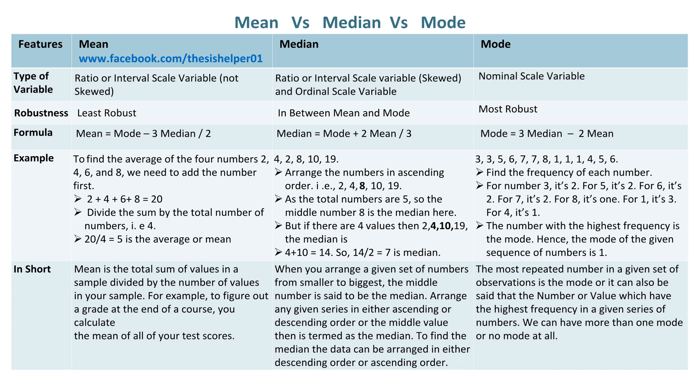When you arrange a given set of numbers from smaller to biggest, the middle number is said to be the median. Arrange any given series in either ascending or descending order and the middle value is termed as the median. To find the median, the data can be arranged in either descending order or ascending order.